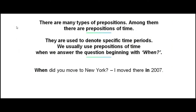Now there are many types of prepositions, and among them are prepositions of time. Note that these prepositions are used to denote specific time periods. We usually use prepositions of time when we answer the question beginning with 'when.' Have a look at the example below: When did you move to New York? I moved there in 2007.